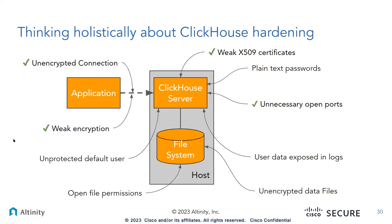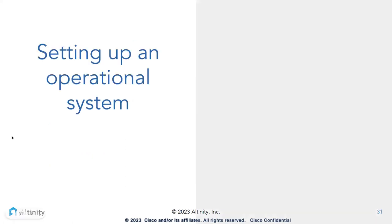Once you have crypto set up — good certificates, encrypted connections, unnecessary open ports removed — you're about halfway to hardening ClickHouse. There are a number of other things needed to operate safely in a FedRAMP environment and meet compliance. I'll turn it back to Pauline, who's going to talk about the automation she's put together to set up an operational system.